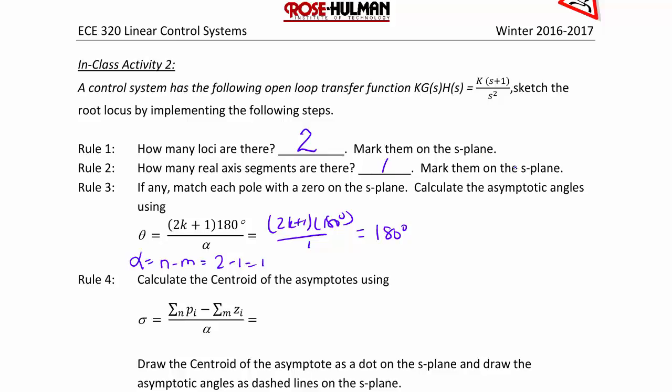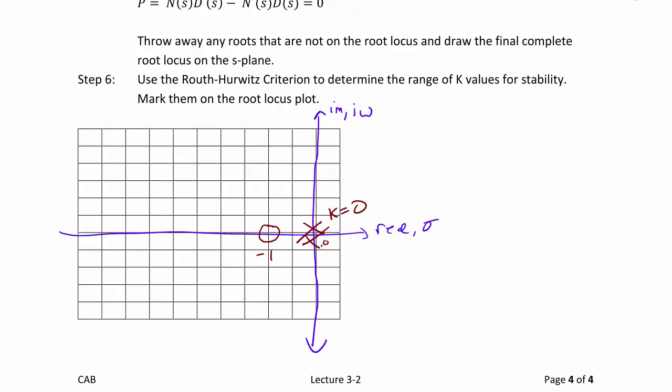So now let's go mark this information on our sketch. So here we have our real axis segment. And the asymptote at 180 degrees indicates that this locus here is going to negative infinity as k approaches infinity. So now we need to calculate the centroid of the asymptotes.